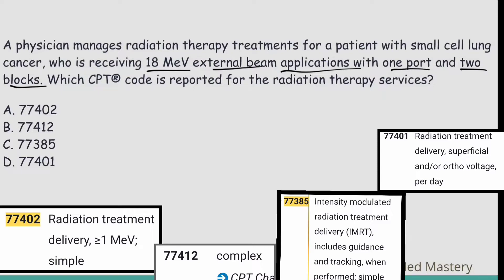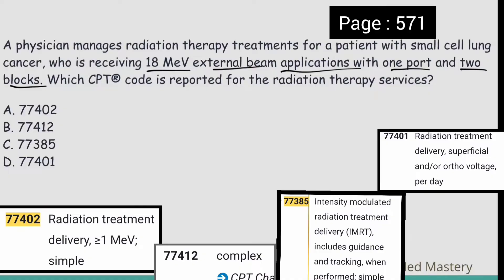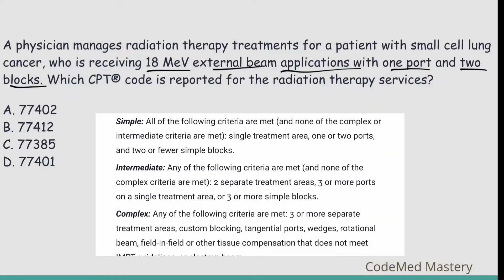There are three types of radiation treatment delivery — you can check CPT manual page 574. The types are simple, intermediate, and complex. For simple, the criteria are: single treatment area, one or two ports, and two or fewer simple blocks.